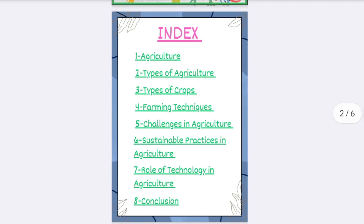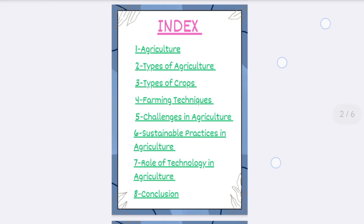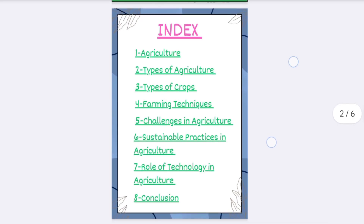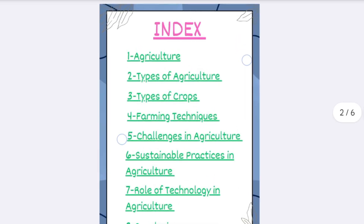The index covers: number one, agriculture; types of agriculture; types of crops; farming techniques; then challenges in agriculture; number six, sustainable practices in agriculture; number seven, role of technology in agriculture; and then the conclusion. You can take a close look at the page.